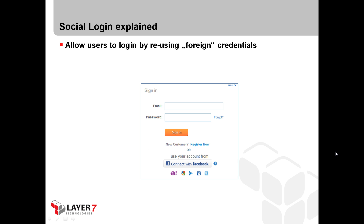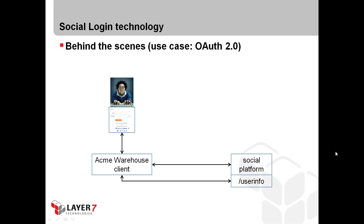On the next slide I will explain how Social Login can be implemented using the OAuth 2 protocol. Imagine there is a user sitting in front of the browser viewing the login screen. Instead of registering, he would like to use his existing Google account. In that case, the user would hit the Google button on the browser.